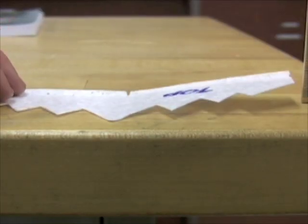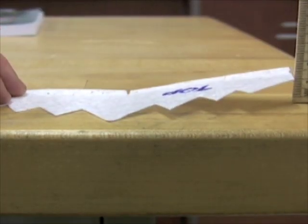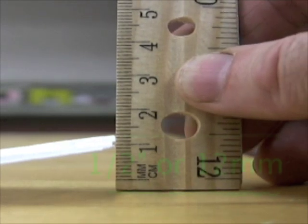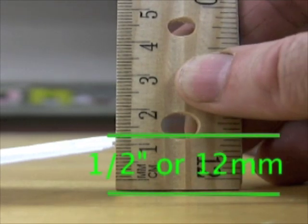You only need a little bend. If you push one side flat, the wing tip of the other side should lift up off the table about half an inch or 12 millimeters.